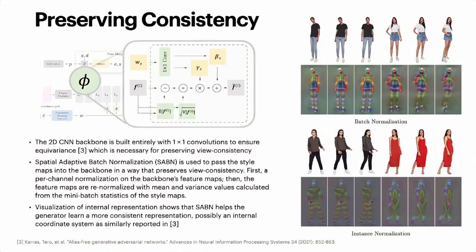The 2D CNN backbone is built entirely with 1-by-1 convolutions to ensure equivariance, which is necessary for preserving view consistency.